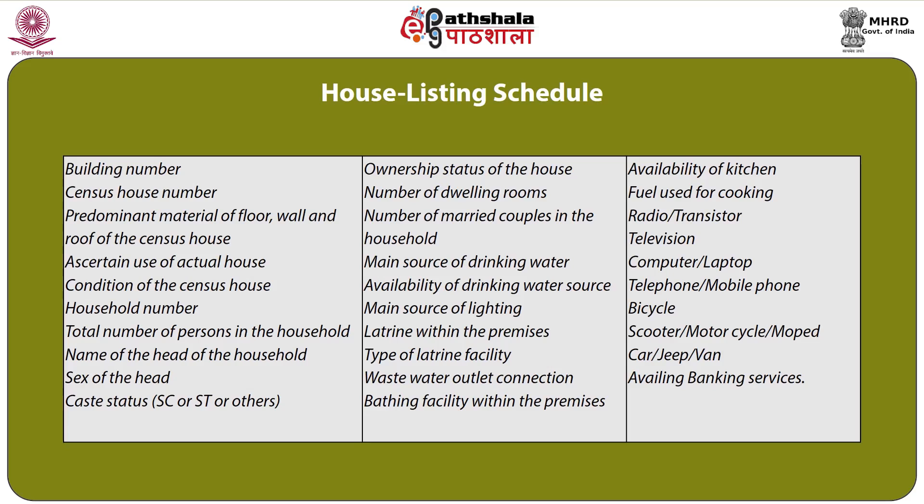The house listing schedule includes questions on building number, census house number, predominant material of the floor, wall and roof of census house, use of the actual house, condition of the census house, household number, total number of persons in the household, name and sex of the head of the household, caste status (SC/ST/others), ownership status, number of dwelling rooms, number of married couples, main source of drinking water, availability of drinking water source, main source of lighting, latrine within the premises, type of latrine facility, waste water outlet connection, bathing facility within the premises, availability of kitchen, and fuel used for cooking.